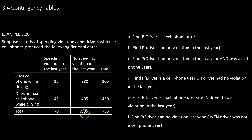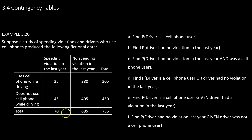We have totals for each row — all the drivers who use their cell phone while driving and all the drivers who don't. We also have the total for all people who got speeding violations last year and the total for drivers who did not. To find how many people are in the study total, we can add any two disjoint groups. Adding cell phone users and non-users gives 755, and adding those with and without violations also gives 755.